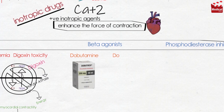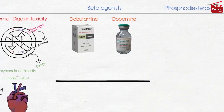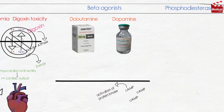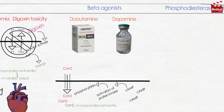The second group of inotropic drugs is beta agonists, such as dobutamine and dopamine. They improve cardiac performance by causing positive inotropic effects and vasodilation. Dobutamine is the most commonly used inotropic agent other than digoxin. Beta-adrenergic agonists lead to an increase in intracellular cyclic adenosine monophosphate, or cAMP, which results in the activation of protein kinase. Protein kinase then phosphorylates slow calcium channels, thereby increasing entry of calcium ions into myocardial cells and enhancing contraction. Both drugs must be given by intravenous infusion and are primarily used in short-term treatment of acute heart failure in the hospital setting.